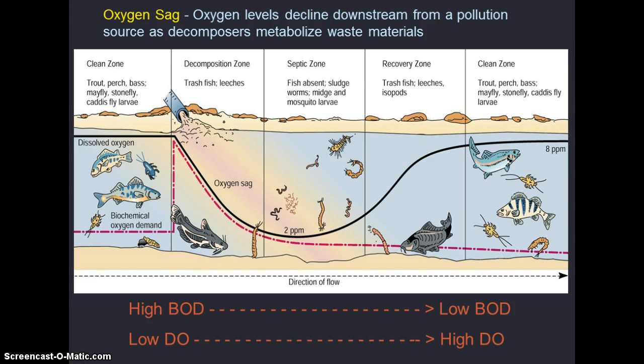In a healthy river, the dissolved oxygen level is high — in this example, 8 ppm — and the BOD is low, say 2 ppm. The effective impact of oxygen-demanding waste on rivers depends on volume, flow, and temperature of river water.